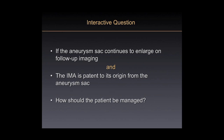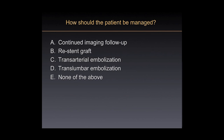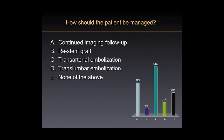Interactive question: if the aneurysm sac is continuing to enlarge more than 5 millimeters in follow-up imaging, and the IMA is patent to its origin from the aneurysm sac, how should the patient be managed? Most people go with transarterial embolization — I think that's the right answer. If the aneurysm is getting larger, you should treat it. My choice would have been option C: transarterial embolization.